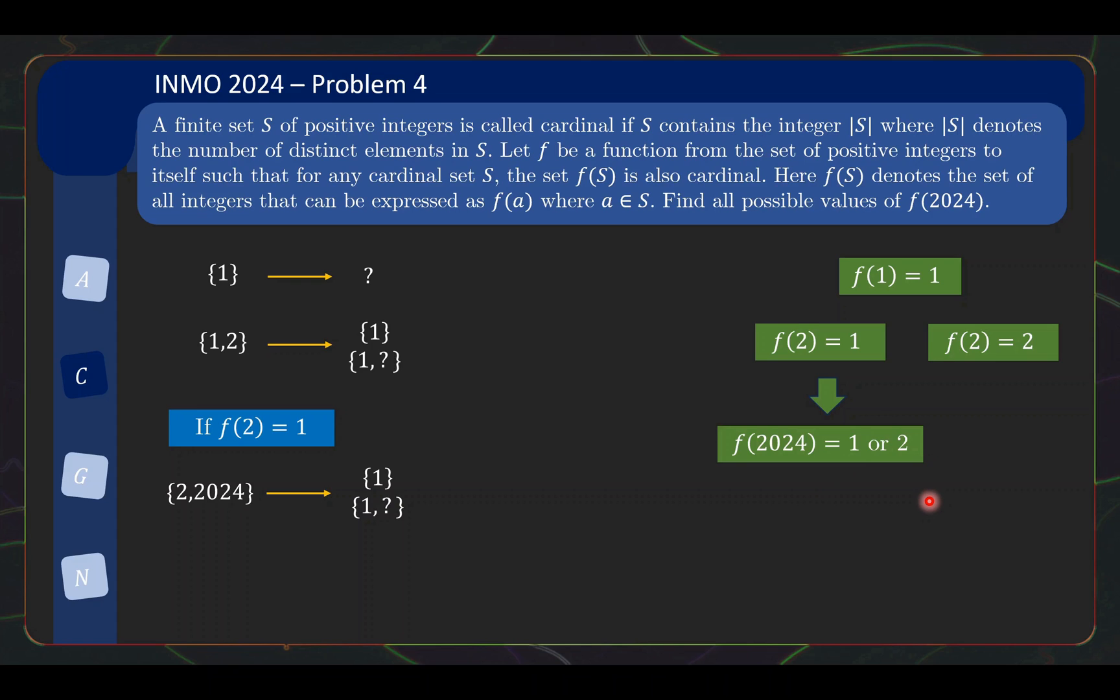Now this doesn't prove yet that these are indeed possible values because we need to still produce valid F that will end up giving us this property for all possible cardinal sets. And at the same time, f(2024) equals 1 or f(2024) equals 2. But let us park this attack now. We know that under this branch, this is the limited number of possible candidates for f(2024). And now let us look at the other branch.